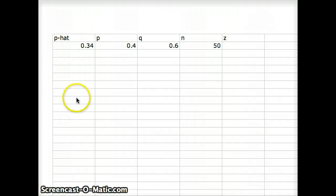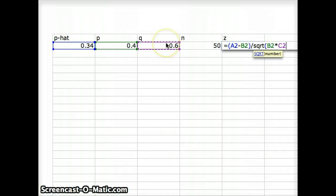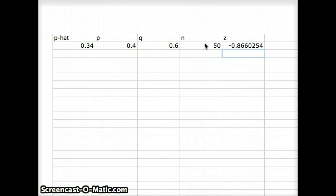So you'll notice I've put in some headers. p-hat, p, q, N, and z. And I've plugged in the numbers that we need here. p-hat is 0.34, p is 0.4, q is 0.6, and N is 50. So this is going to equal p-hat minus p, divided by the square root of p times q over N, and that will give me negative 0.866.